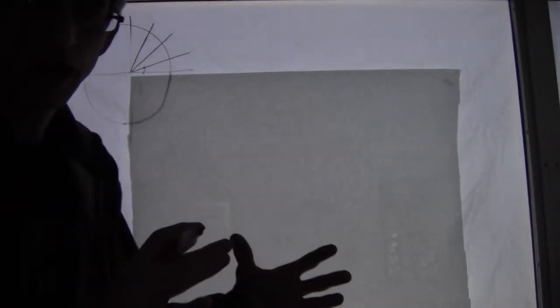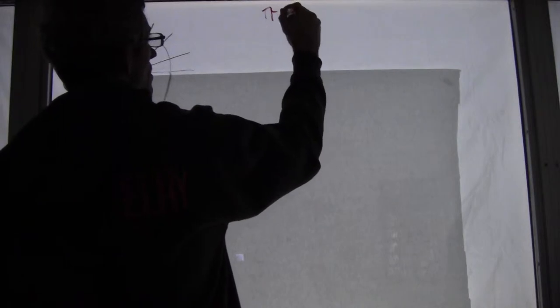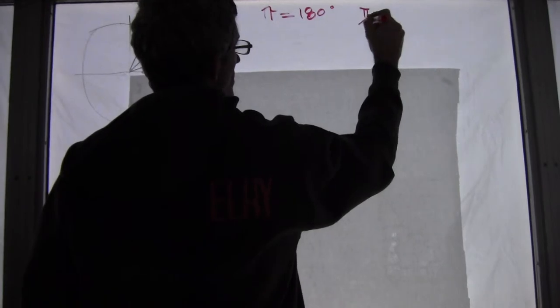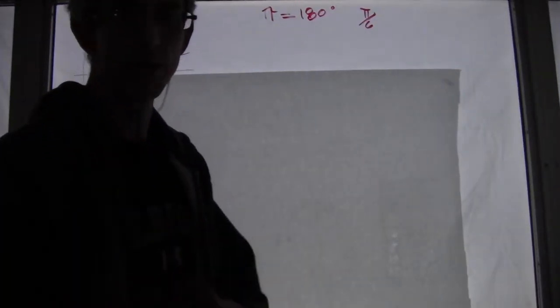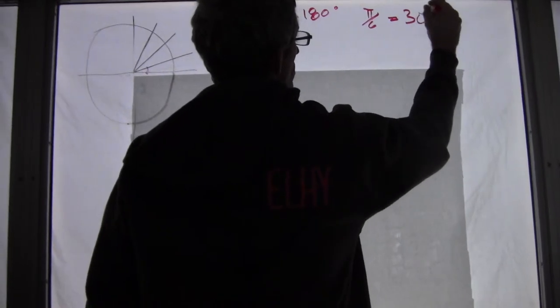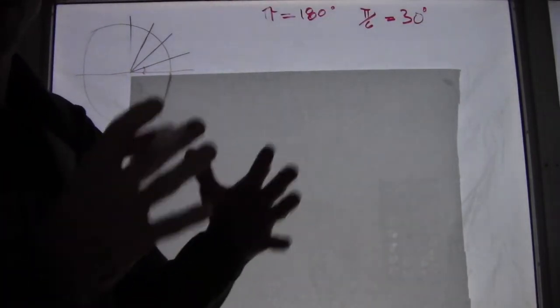Which is also pi divided by 6, because pi, remember pi in radians is equal to 180 degrees. So therefore pi divided by 6 would be 180 divided by 6, which equals 30 degrees. So you want to get comfortable with going back and forth between radians, which is always going to have pi, and then degrees.